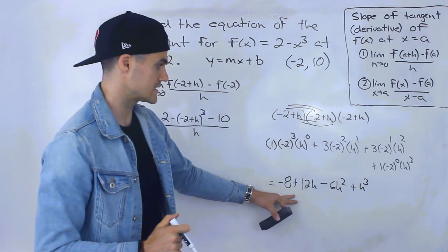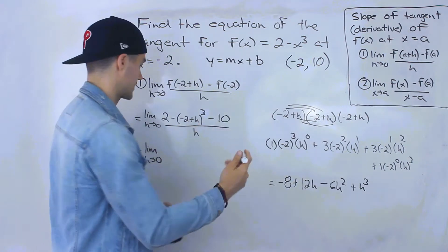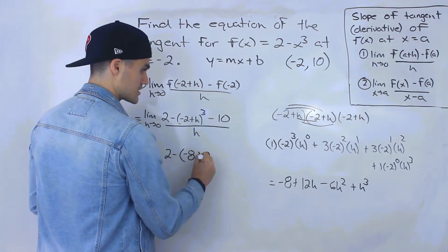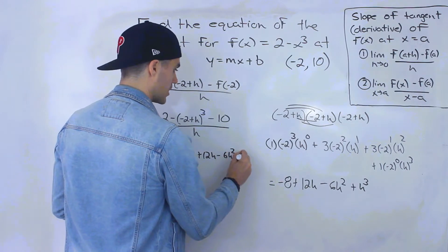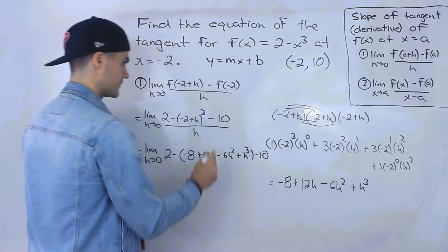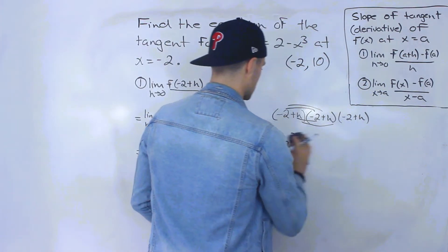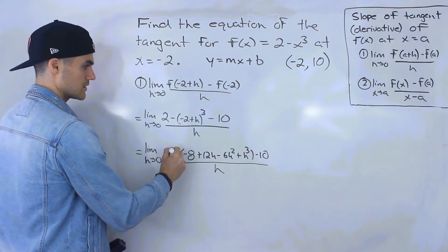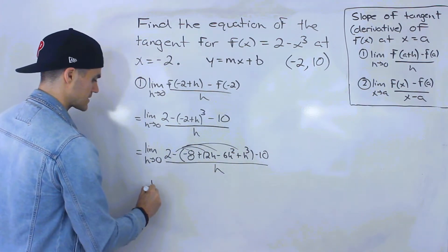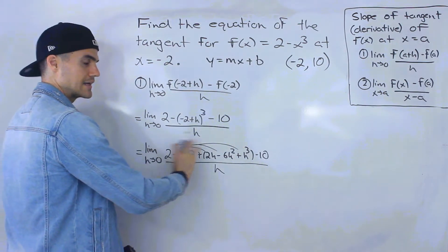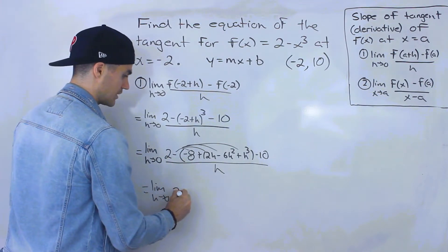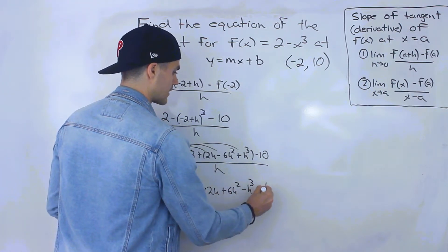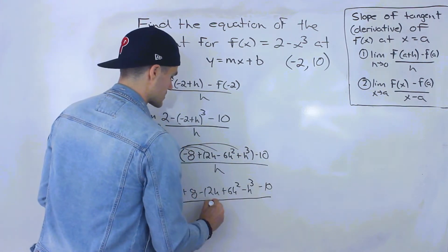That expanded expression has to go in brackets because we're subtracting that whole term. So we have 2 minus (negative 8 plus 12h minus 6h squared plus h cubed) minus 10, all over h. Distributing the negative inside the bracket, all the signs switch: we get 2 plus 8 minus 12h plus 6h squared minus h cubed, and then minus 10, all over h.